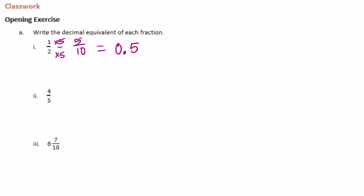For 4 fifths, we make it out of tenths: times 2 gives us 10, so times 2 gives 8 — that's 8 tenths, or 0.8. Then 6 and 7 tenths is already in tenths, so we just write it as 6.7.